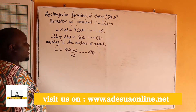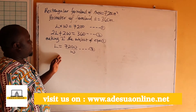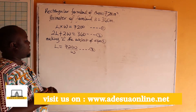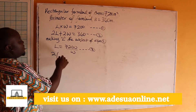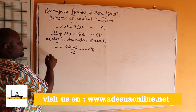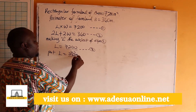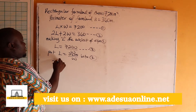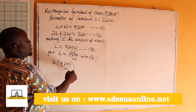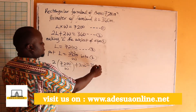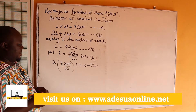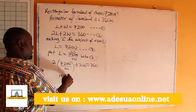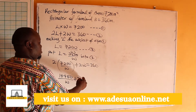Making L the subject of equation 1, we get L equals 7,200 over W — call this equation 3. Now we replace L in equation 2 with 7,200 over W. So we have 2 times (7,200 over W) plus 2W equals 360. Simplifying, 2 times 7,200 gives us 14,400 over W plus 2W equals 360.